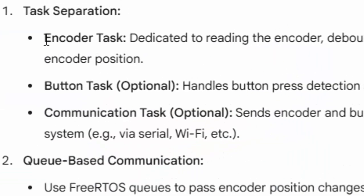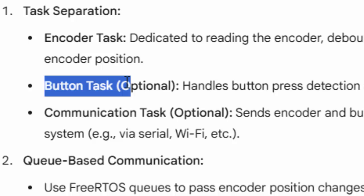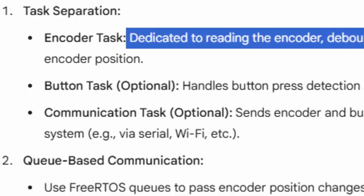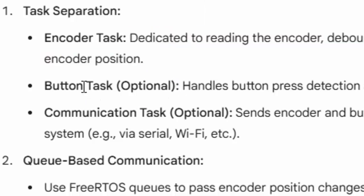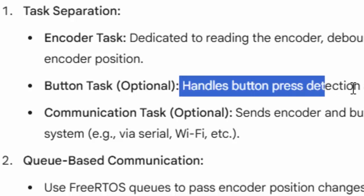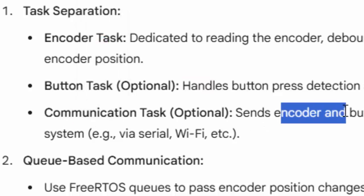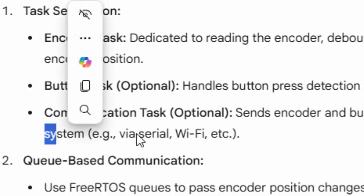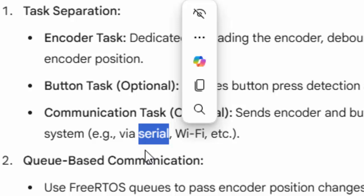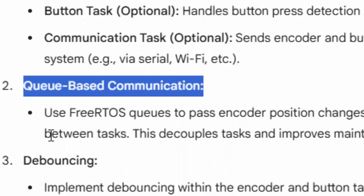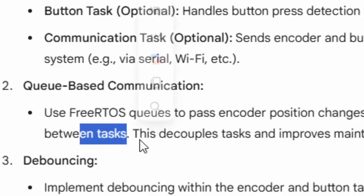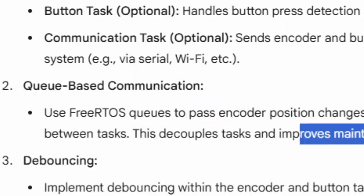The encoder task is dedicated to reading the encoder, debouncing, and updating the encoder position. The button task handles button press and resets the encoder position. The communication task sends encoder and button data to the system via serial port or Wi-Fi — today we use the serial port. We use queue-based communication so FreeRTOS queues pass encoder position changes and button press events between tasks, which decouples the tasks and improves maintainability.